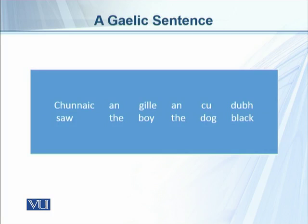When we translate the Gaelic sentence into English, we see that it goes: 'saw,' then 'the boy,' then 'the dog,' then 'black.' This means that the Gaelic sentence starts with a verb phrase — 'saw' — followed by a noun phrase, and then the noun phrase consisting of the dog and the adjective 'black.'